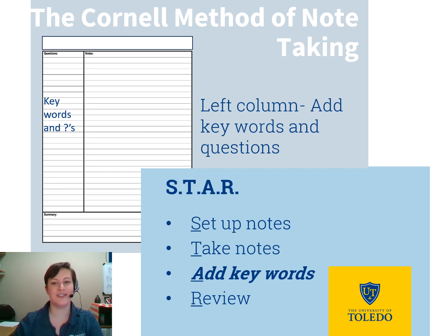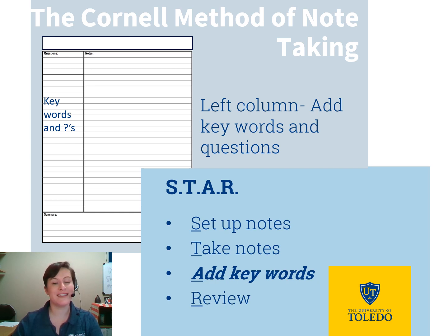Next, you will add keywords and questions to the left column. This can be done as you take notes in the right side column or upon review. This is the section that makes the Cornell method a great way to highlight major concepts and important questions. Consider adding keywords that you define next to them in the right side column, anticipated exam questions, or main ideas. For example, in a biology course, your left side column may say 'what is photosynthesis?' while your notes in the right side column may say 'a process used by plants and other organisms to convert light energy into chemical energy' and include details on the process.